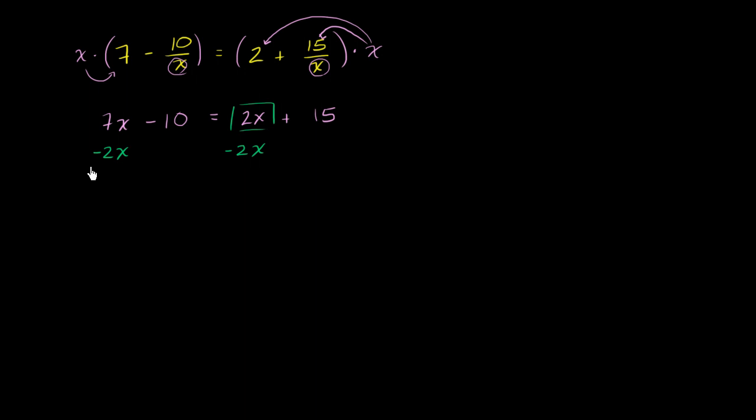And so we are left with, the left-hand side, 7x, 7 of something minus 2 of something, you're going to have 5 of that something, minus 10. These 2x's negate each other, and you're left with equals 15.